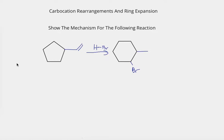In the example that I have shown you we see a cyclopentane with a double bond that's reacting with HBr. The example is asking us to show the mechanism, which means we need to show the arrows for the transformation of the reactant to the product.